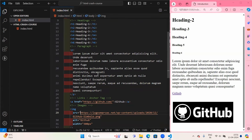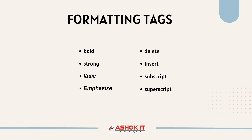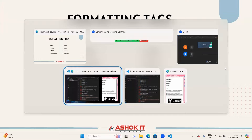Now let us see formatting tags in HTML. The formatting tags available are bold, strong, italic, emphasize, delete, insert, subscript, and superscript. We will see these in action in VS Code. Let us move to VS Code and take a new file for formatting tags.